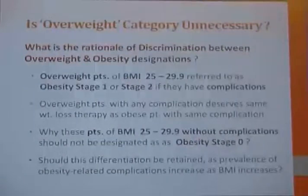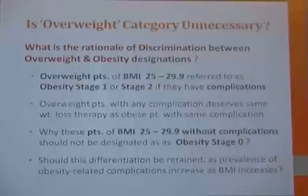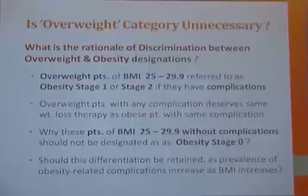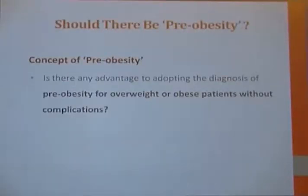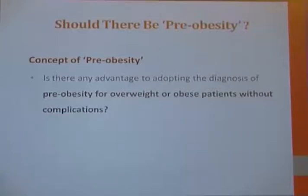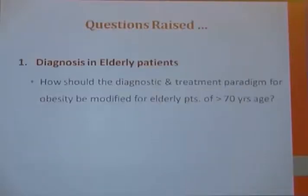Why should patients with BMI above 25 without complications not be designated as obesity grade zero or stage zero? Should this differentiation be retained, given that prevalence of obesity-related complications increases as BMI increases? The concept of pre-obesity has been raised: is there any advantage to adopting this diagnosis of pre-obesity — like pre-diabetes or pre-hypertension — for overweight or obese patients without complications?